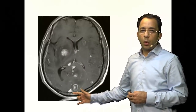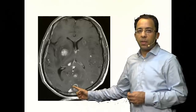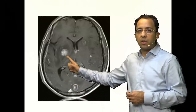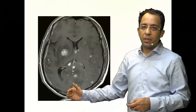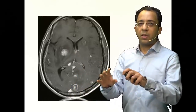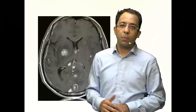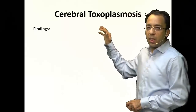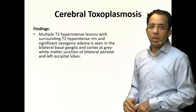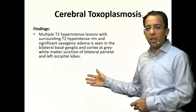Not only do you see ring-enhancing lesions, but you also see an eccentric target-like appearance — also described as a pea-in-a-pod appearance. With these findings and the patient being HIV positive and immunocompromised, this is the classic appearance of toxoplasmosis.